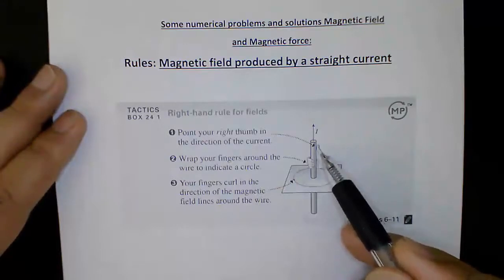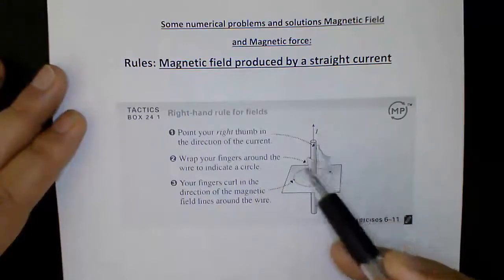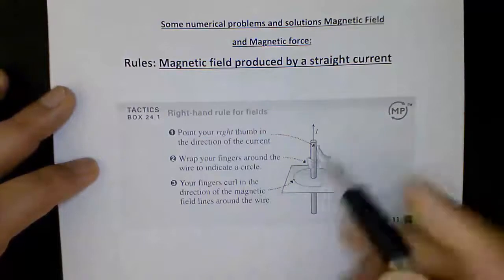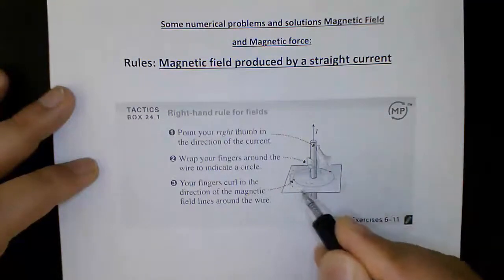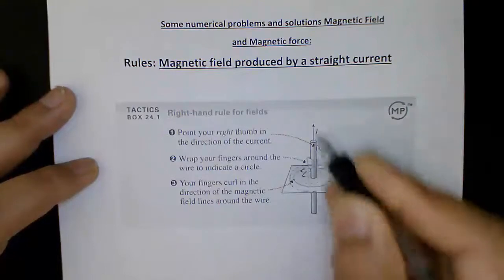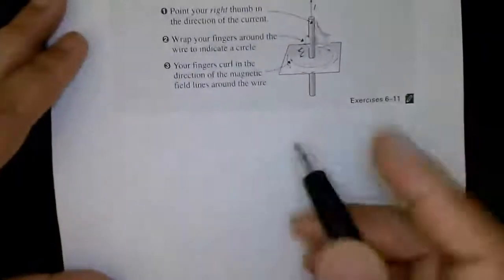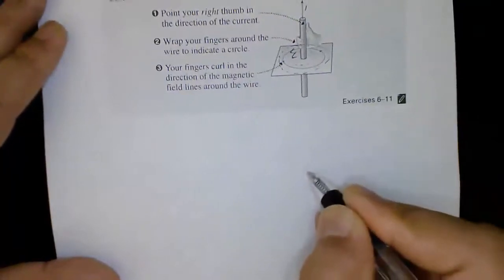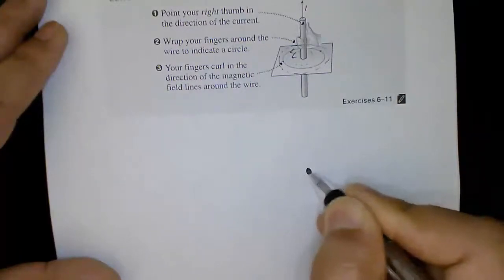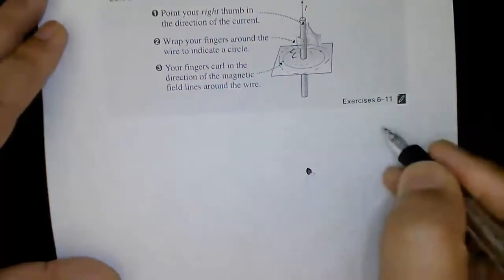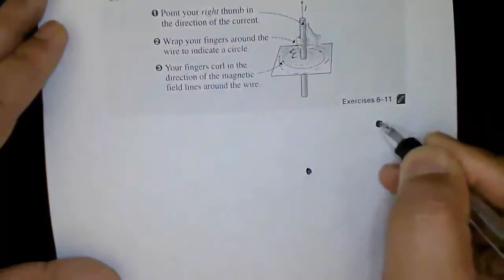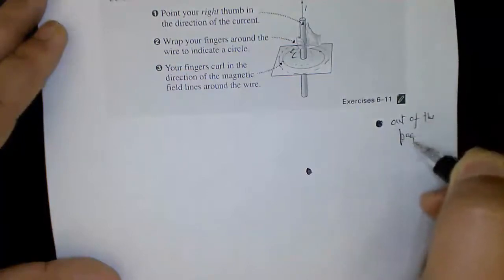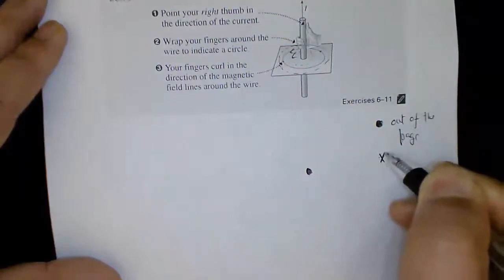Using the right hand, point your thumb towards the direction of the current and your fingers show the direction of the magnetic field. In this example, the field pattern will be counterclockwise if the current is upward. Now, two rules: if something is coming out of the page we use a dot, and if something is coming into the page we use a cross.